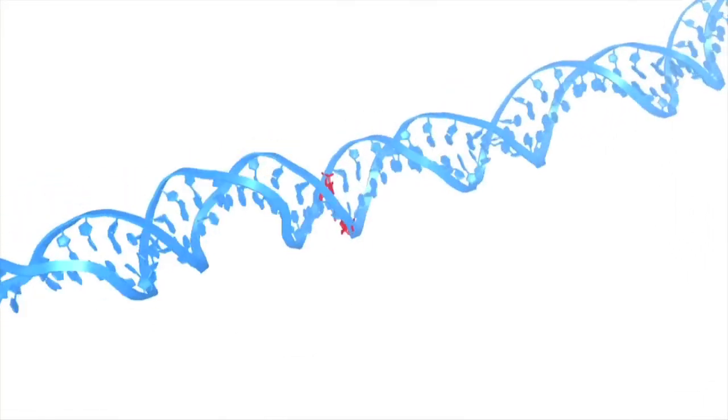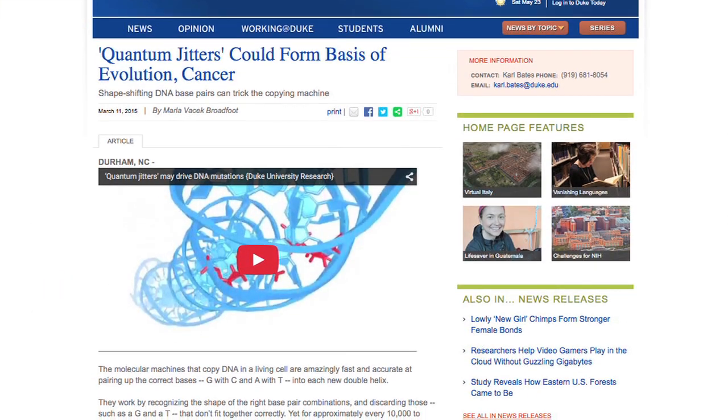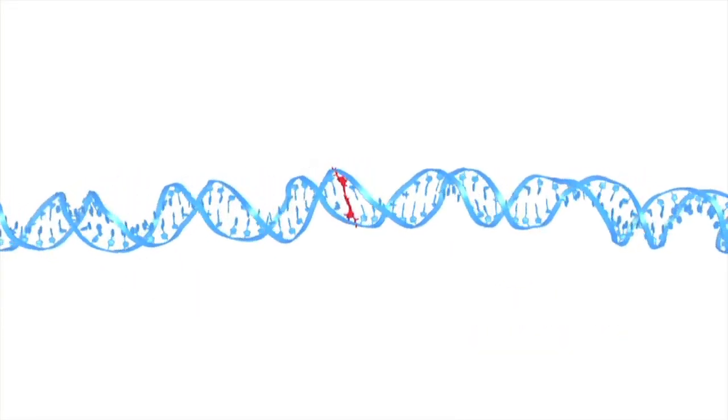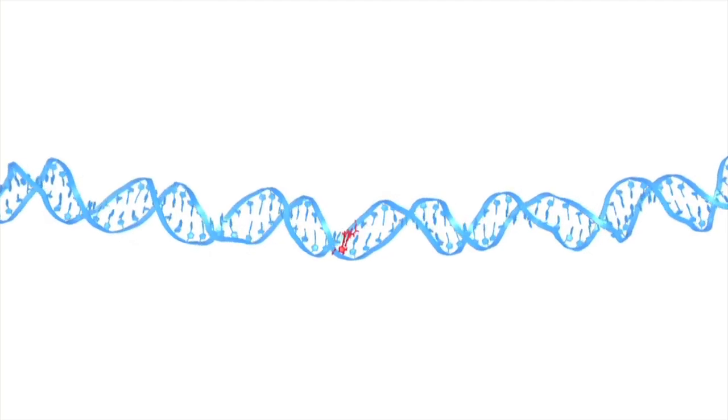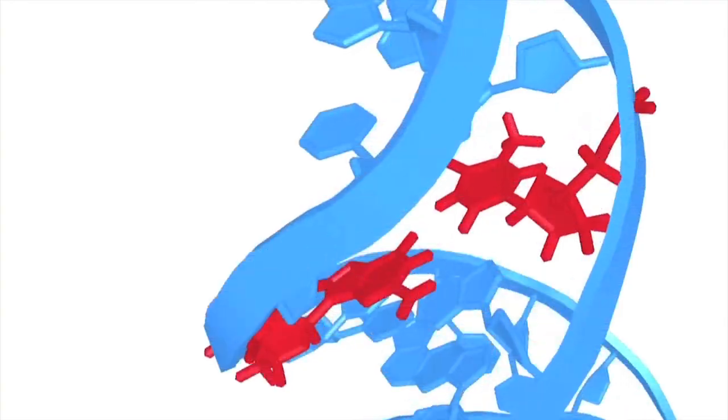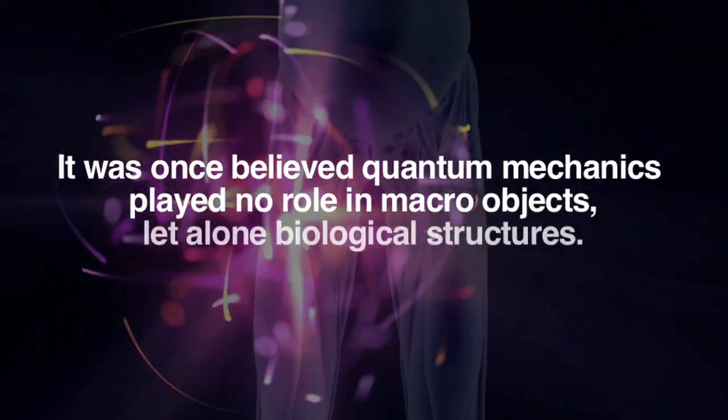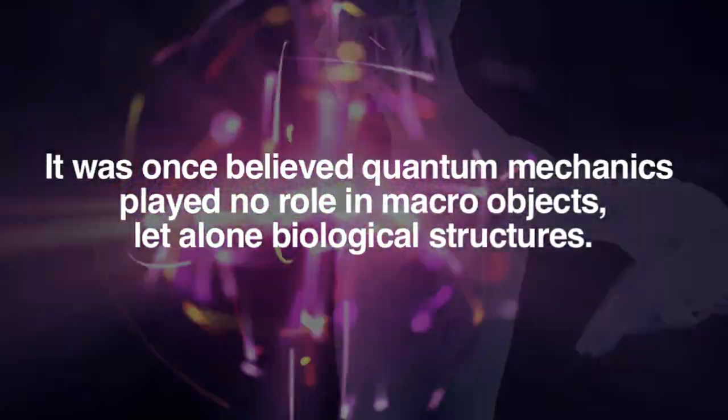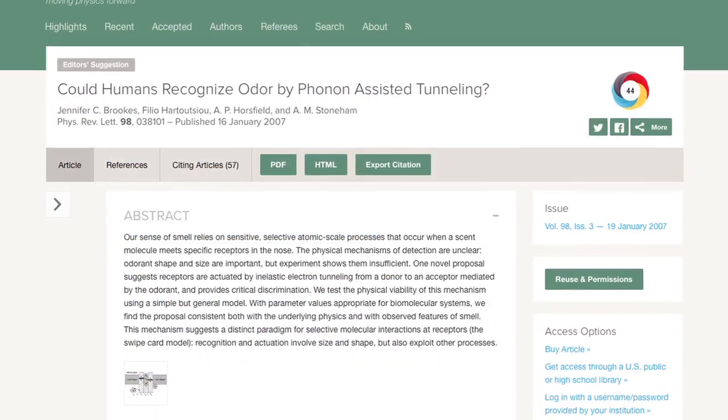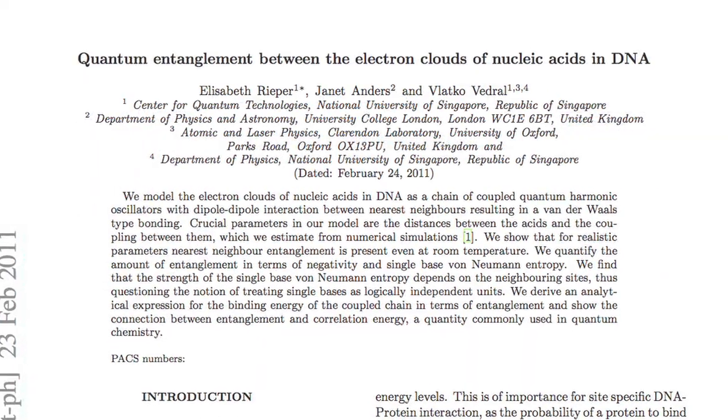Quantum mechanics has been shown to play a role in photosynthesis, how birds migrate, and how our sense of smell works. Quantum entanglement has been shown to hold together DNA, the code of life itself. Within DNA, there is evidence that quantum jitters, random instantaneous changes, could be causing genetic changes and be a driving force for evolution.